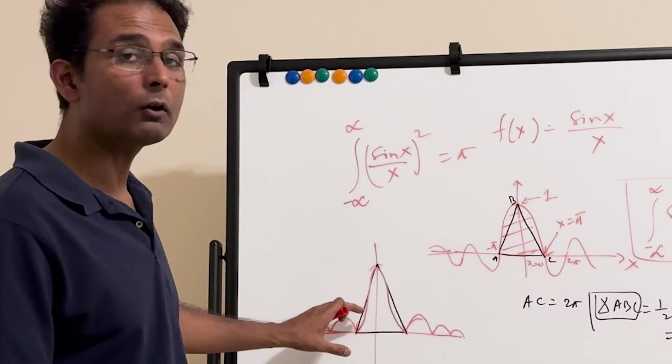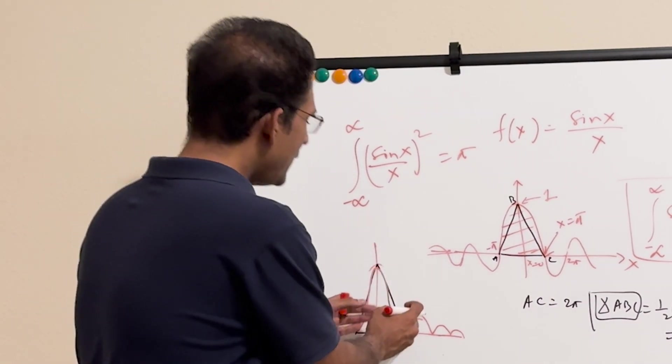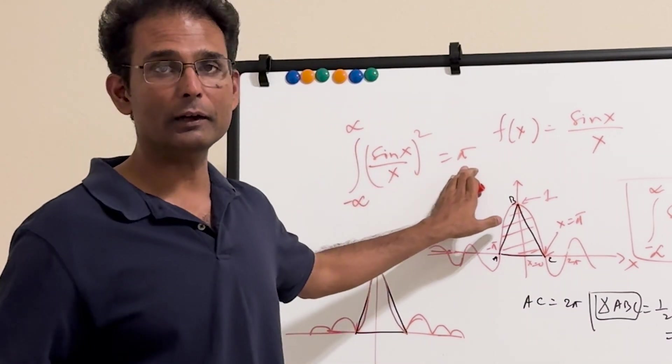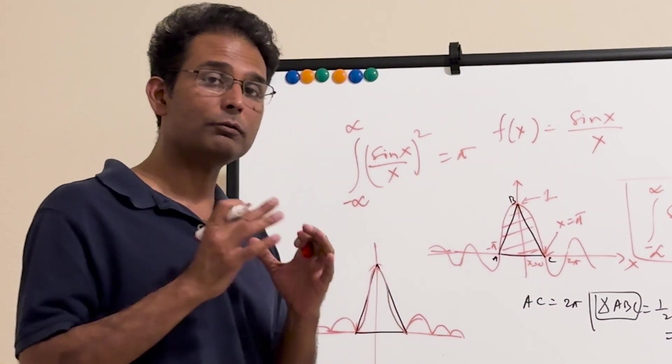...the main lobe of this function now has to be within the triangle somehow. Its area, the area of the main lobe has to be shorter than the triangle. Why? Because you're adding all these positive numbers now, right? To the main lobe, and the sum is pi.